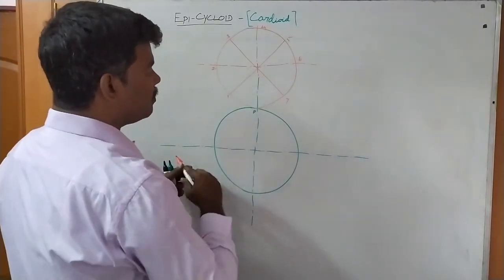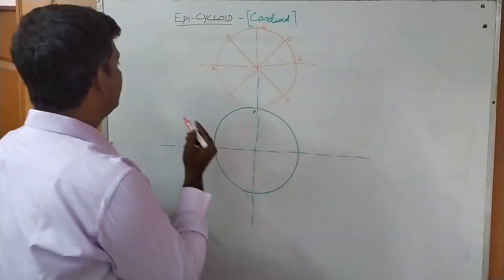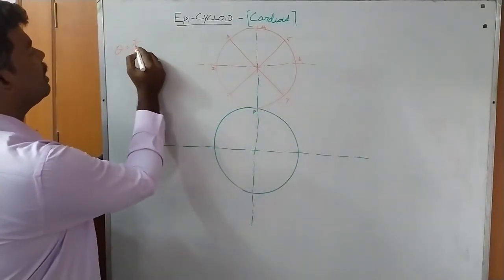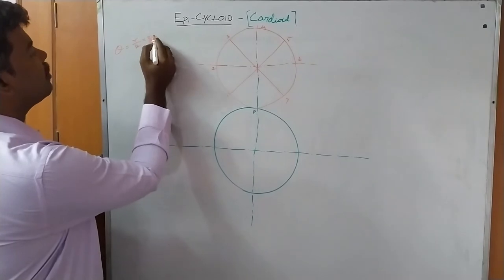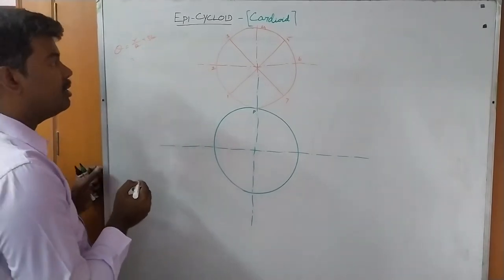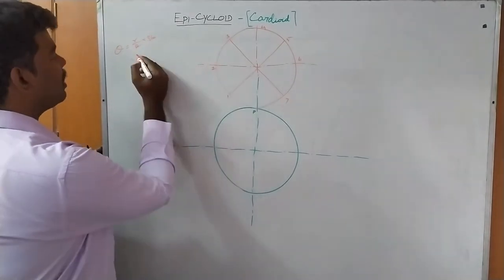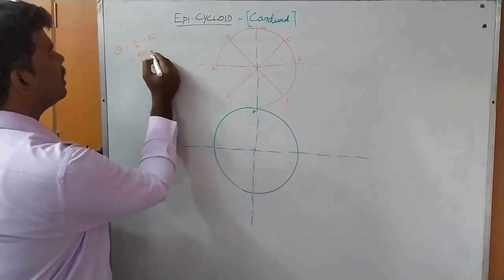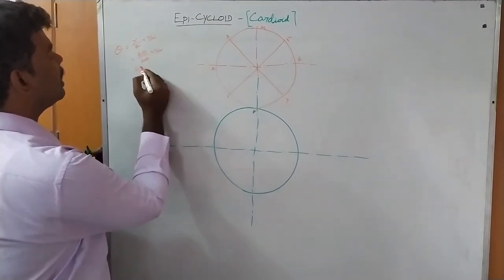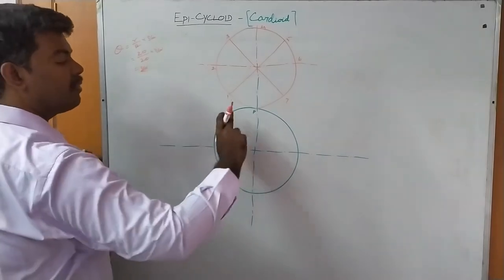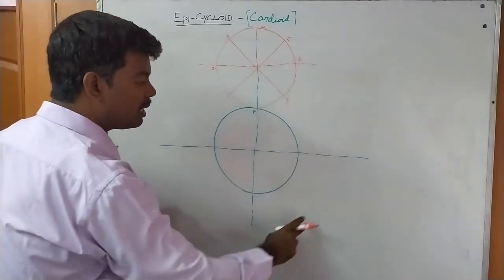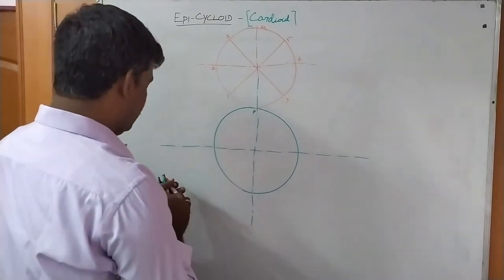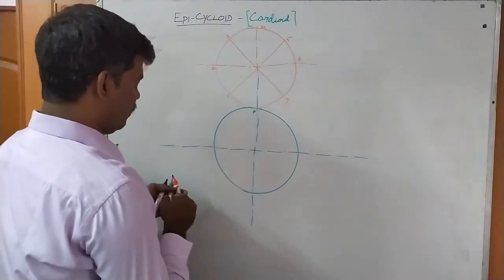Next, determine theta. The formula is: (r / R) × 360, or small d divided by capital D × 360. Here, dia 40 means radius 20, and the other wheel also has radius 20. Therefore the result is 360 degrees, so you need to draw a 360-degree concentric curve — which is a full circle.